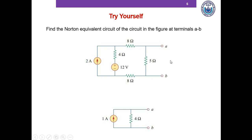The determination of Norton resistance is exactly the same as the determination of Thevenin resistance. The only difference between Thevenin and Norton is that for Thevenin we determine the open circuit voltage VAB, while for Norton we determine the short circuit current IAB. Alternatively, we can determine the Thevenin equivalent of this circuit and do a source transformation, and we will see that it ends up with the same circuit.